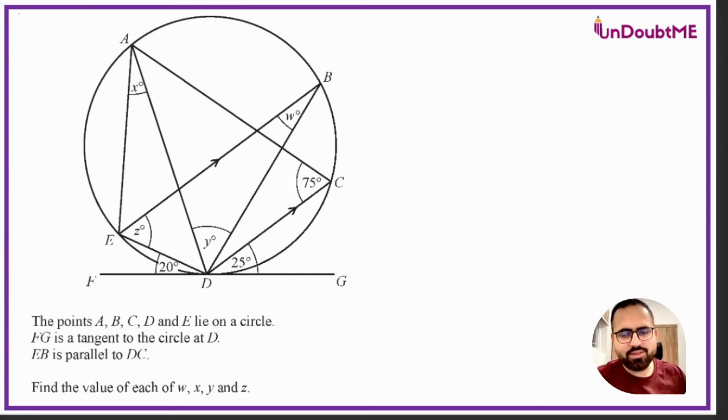Hi, in this question you can see in the diagram that they have given a circle and there are points A, B, C, D, E which are lying on a circle. FG is a tangent to the circle at D, and EB is parallel to DC. We need to find all these unknown letters: w, x, y, and z.